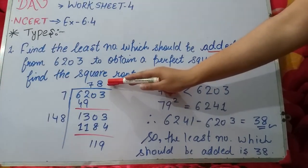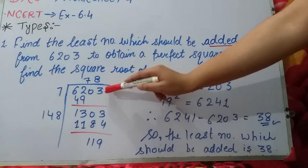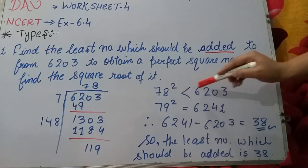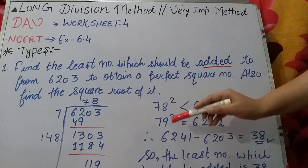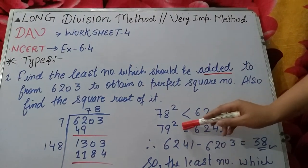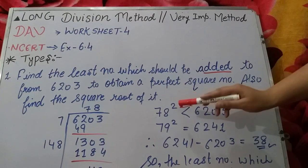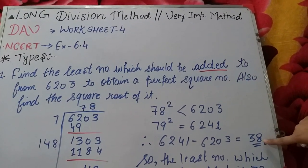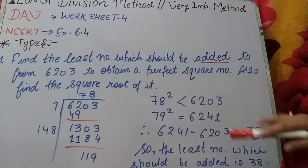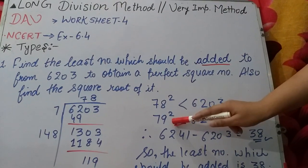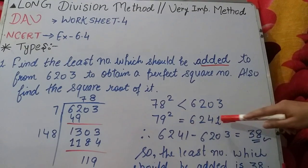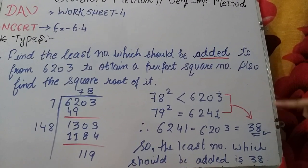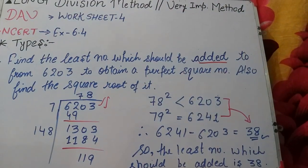Since 78² is smaller than the given number and the remainder is not zero, we take the next number: 79. We calculate 79². Now we subtract: 79² minus the given number. The difference is 38. That 38 is your least number — you have to add 38 so that the given number becomes a perfect square. The square root will then be 79.